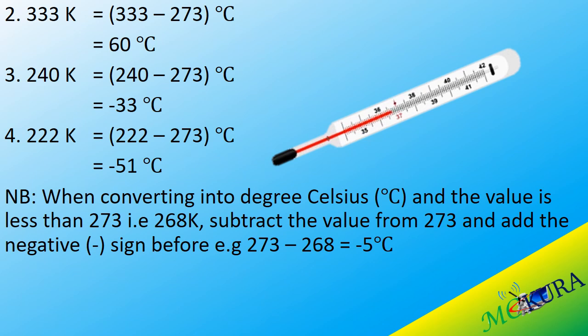If we have a value lower than 273, like 240 Kelvin, we subtract 240 from 273 to get negative 23 degrees Celsius. Similarly, if we have 222 Kelvin, we subtract 222 from 273 to get negative 51 degrees Celsius. When converting to degrees Celsius and the value is less than 273, subtract the Kelvin value from 273 and apply a negative sign. For example, 268 Kelvin: 273 minus 268 equals 5, so the answer is negative 5 degrees Celsius. You need to do more practice.